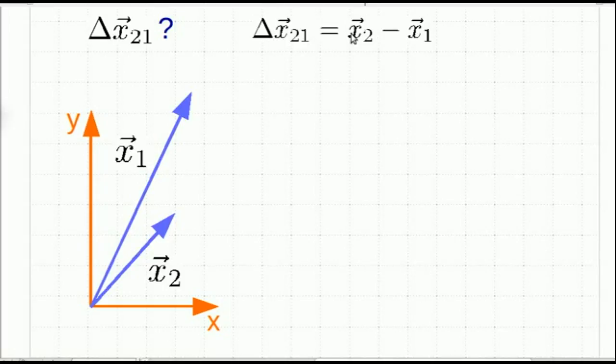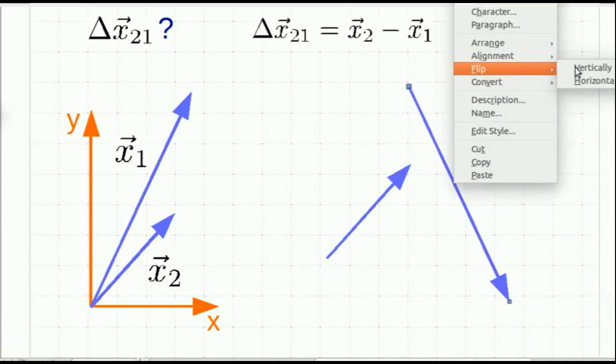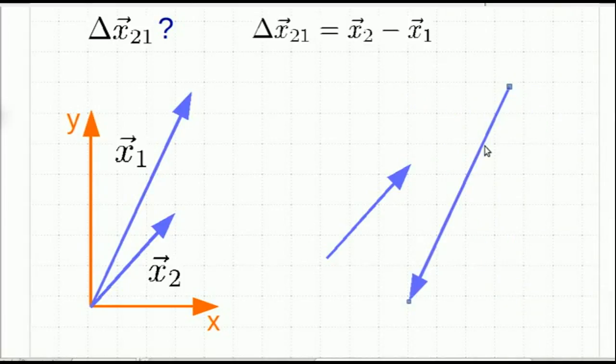And let's see what delta x21 looks like. Let's carry out that vector subtraction. So I'm going to grab a copy of x2 and throw it over here. And I'm going to grab this copy of x1 and I'm going to flip it around which means I have to flip it both horizontally and vertically. And so there we go.